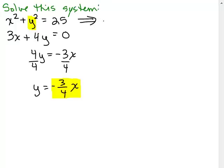So this now becomes, once I substitute, I'm going to have to plug in negative 3 fourths x for y and I'm going to have to square it. Don't forget to square both sides.